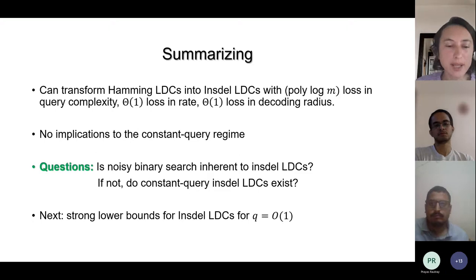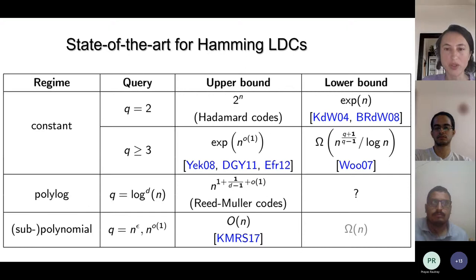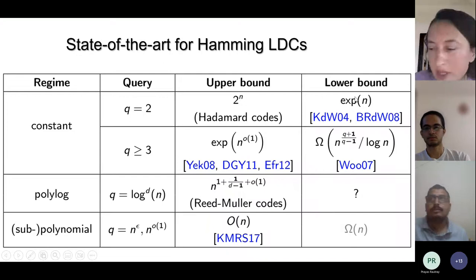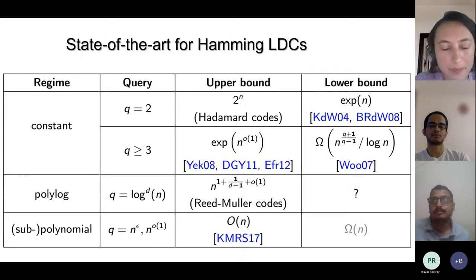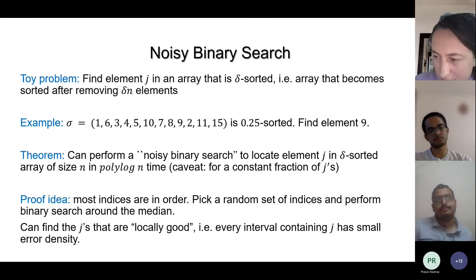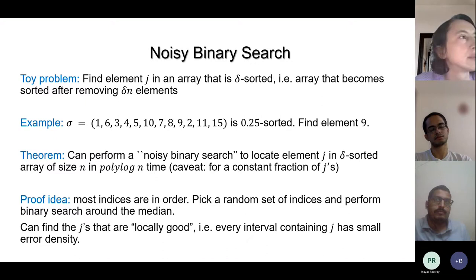The next topic is lower bounds for constant queries. For two queries, Hadamard is optimal. There is an amazing paper by Kerenidis and de Wolf showing an exponential lower bound for 2-query Hamming LDCs using quantum computing arguments, which was later de-quantized. That lower bound applies to INSDEL too, since Hamming errors are a special case of insertion-deletion errors. For Q ≥ 3, the Hamming lower bounds are extremely weak — almost linear. A question from the audience: whether the noisy binary search queries are adaptive. The Hadamard construction was non-adaptive, and adaptivity is a relevant consideration.